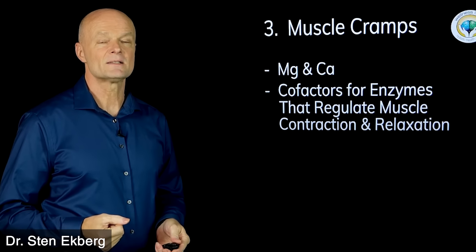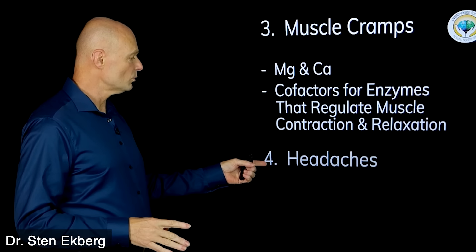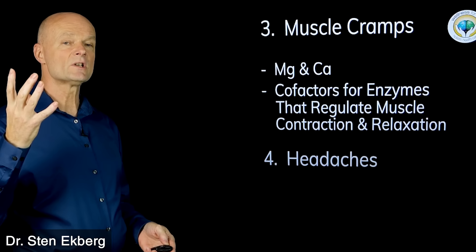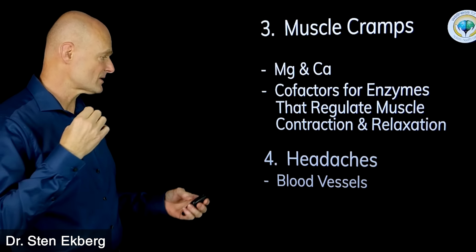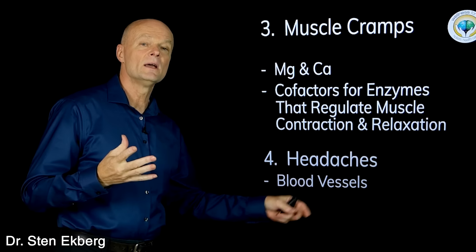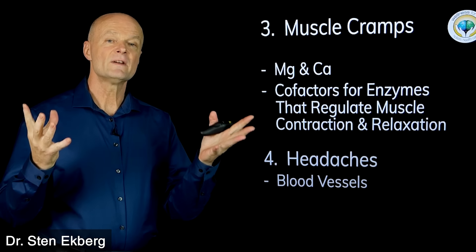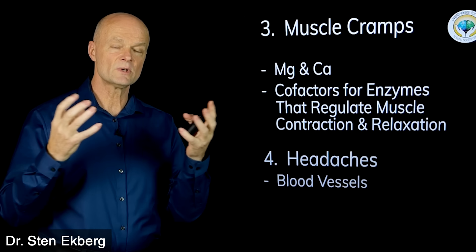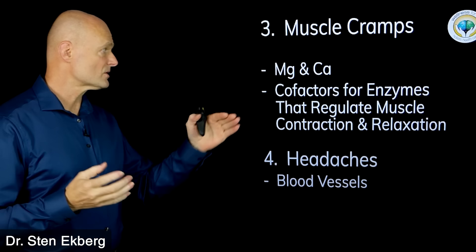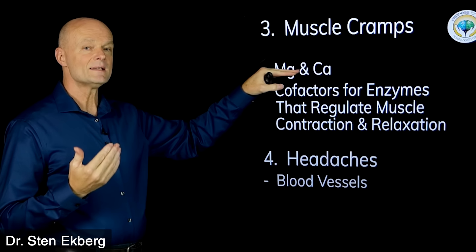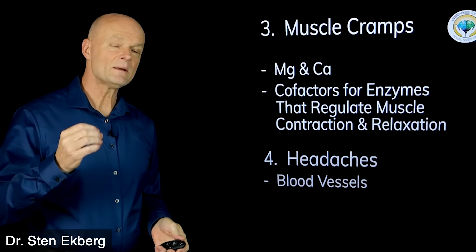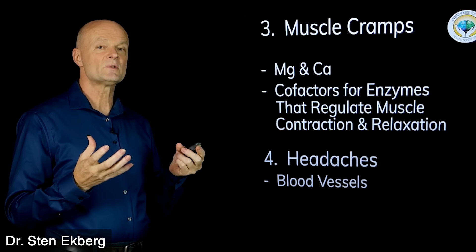And that explanation also covers number four, which is headaches. Headaches, especially the vascular ones, are due to tight muscles. Blood vessels have muscles in them, so when you regulate blood flow, there is vasoconstriction—muscles in the blood vessel contracting causing constriction and relaxing causing dilation. So if you have imbalances or losses of magnesium and calcium, that's also going to affect the blood vessels and the blood flow.